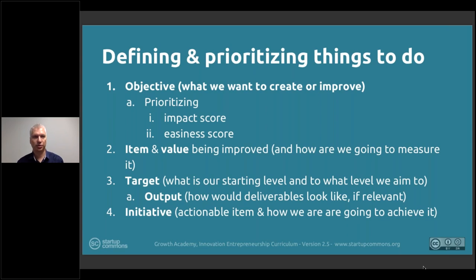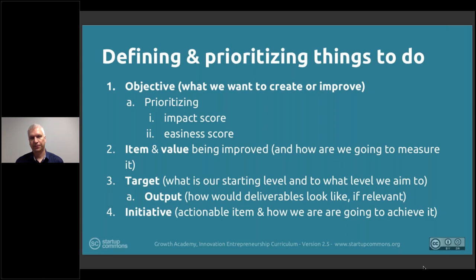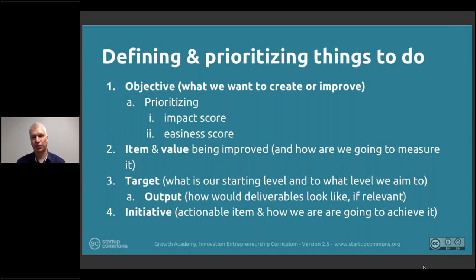Each item you're looking to improve needs a name and a specific measurable form so you know what you're talking about. It also needs a defined value — because if there's no value being improved, how can you even evaluate progress? You need to be able to measure that value so you can check and assess your progress.